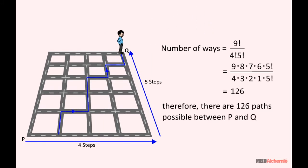Therefore, we put 5 factorial and 4 factorial in the denominator. So there are 126 paths connecting the points P and Q with the given restrictions.